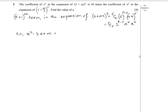Now for the x cubed term, in the (r+1)th term the power of x must be 3, so r must equal 3. Using r = 3, we can write 5C3 times 2^2 times a³ times x³. Therefore the coefficient of x³ is 5C3 times 2² times a³.